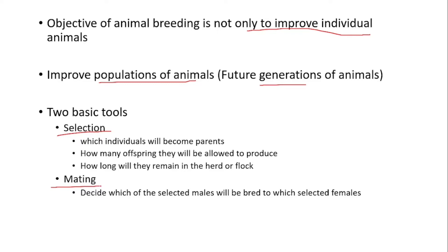Selection can be defined as the preferential use of animals for the production of the next generation. In selection, animal breeders make three types of decisions. First, they decide which individuals will become the parents of the next generation — in simple words, animal breeders select a few individuals which are superior in some traits from the population to make them the parents of the next generation.